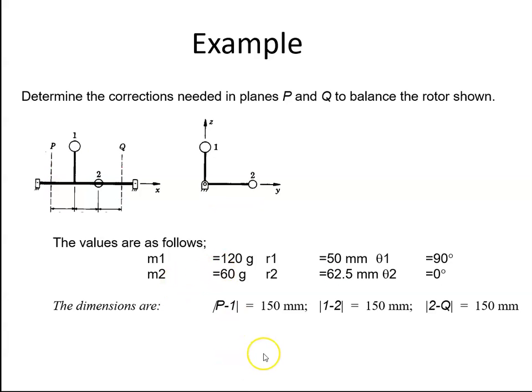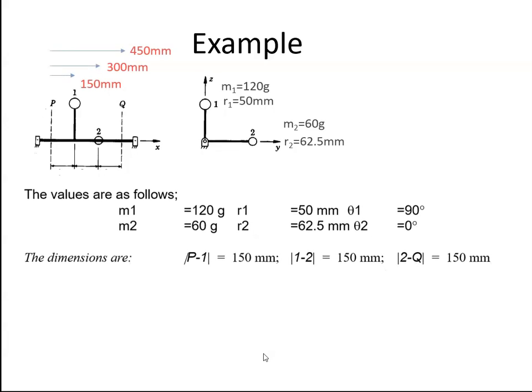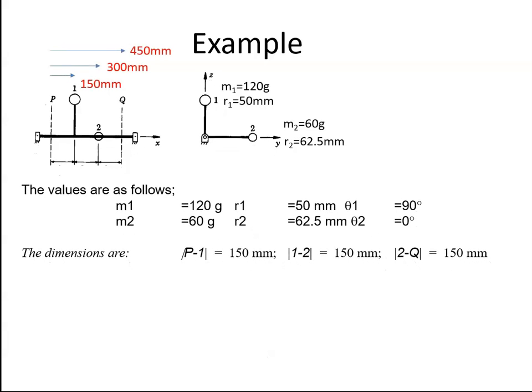So let's see how we get on. There are our values and we were given the dimensions from P to 1, it's 150 millimeters. From 1 to 2 is 150, that means from P to 2 is 300. And from 2 to Q is 150, that means from P to Q is 450 millimeters.